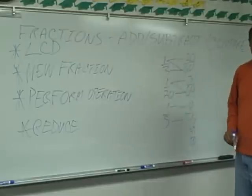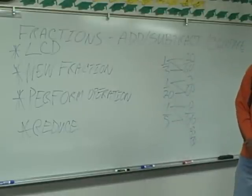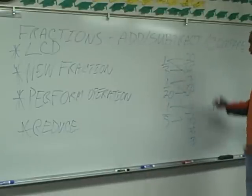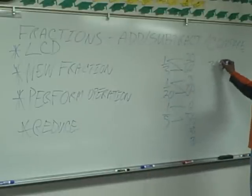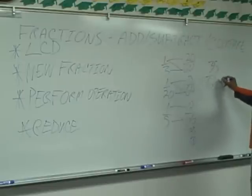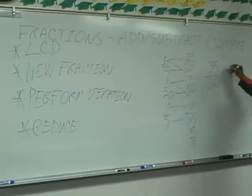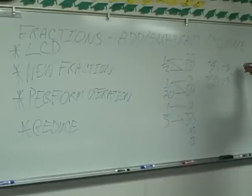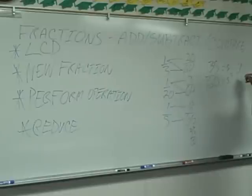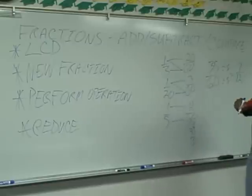Are we done? No. We have to do step four. What's step four? Reduce. So how do we reduce thirty-five sixtieths? We divide by five. Thirty-five divided by five is seven. Sixty divided by five is twelve. So we get seven-twelfths.